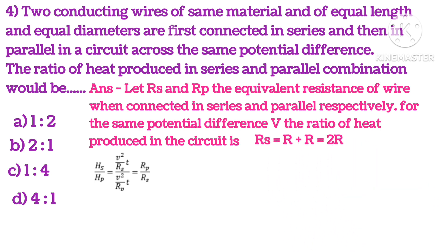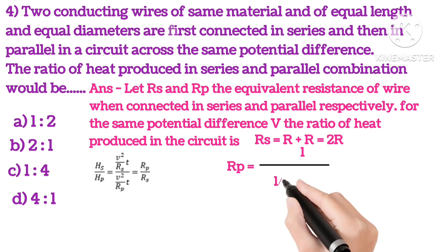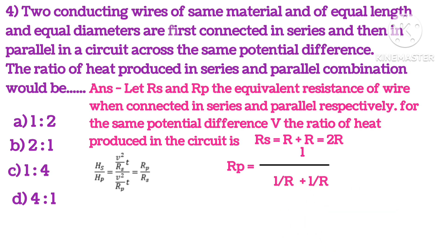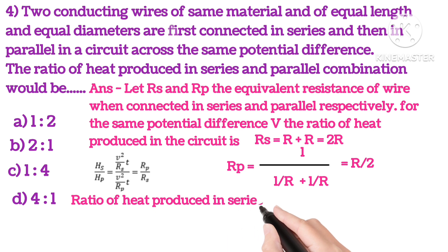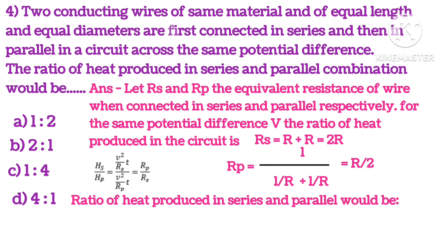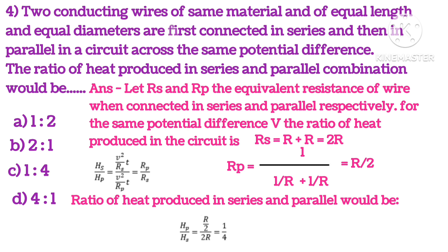We know that in series RS will be 2R (R plus R), and in parallel connection RP will be R upon 2. So the ratio of heat produced in series and parallel, putting in the values, we get 1 is to 4. So option C is correct.